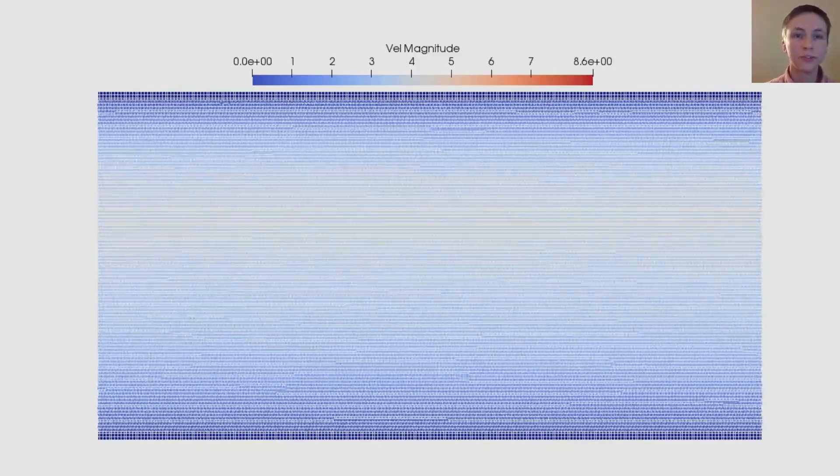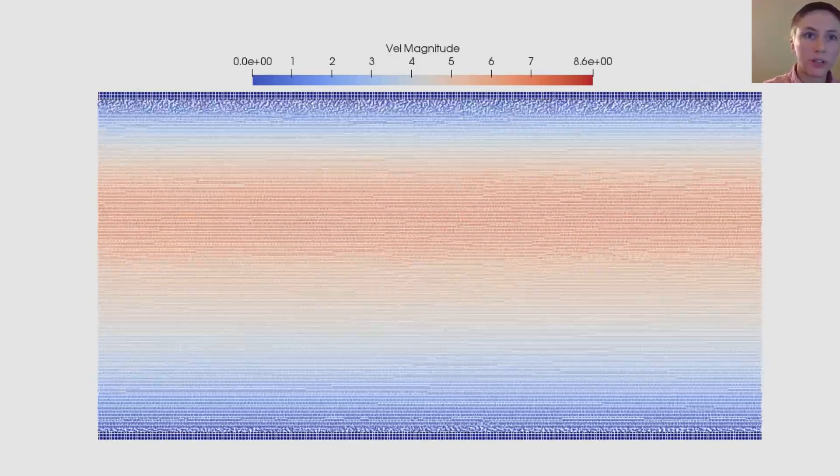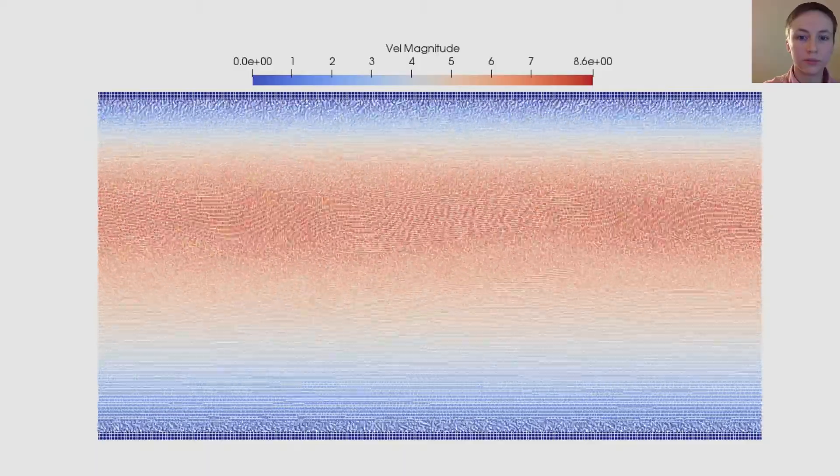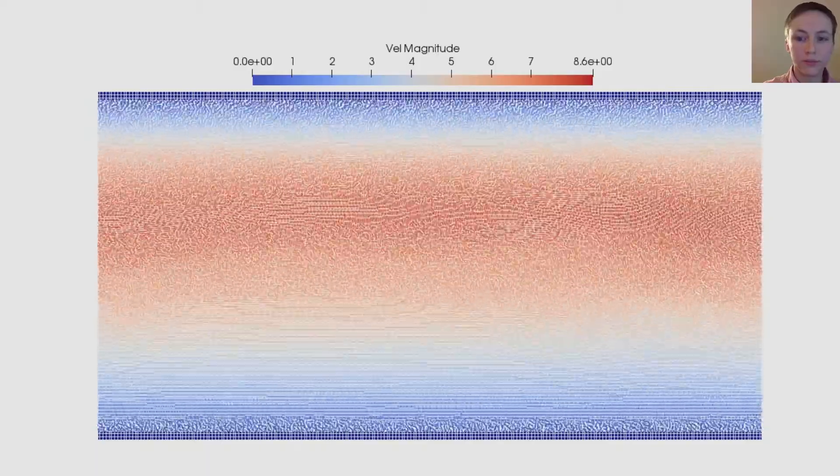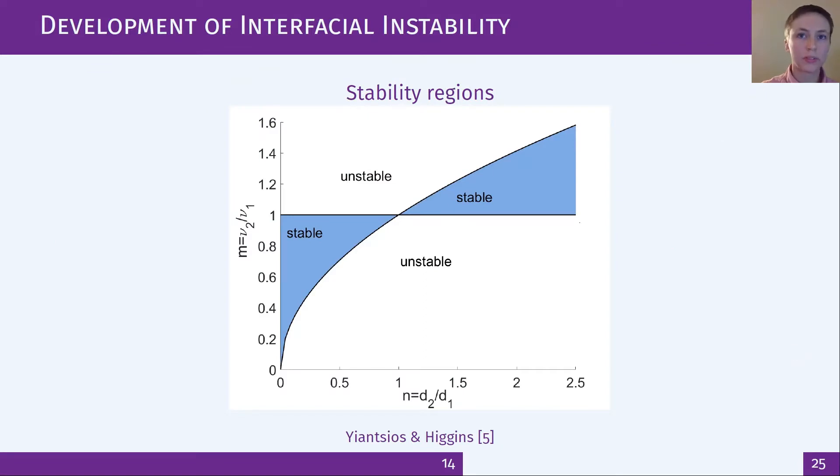This video shows the flow developing and going unstable colored by velocity. You can first see the unsymmetric velocity profile develop and then you can see that the instability starts to develop as a wave at the interface before spreading out across the channel. Now this sort of long wavelength instability occurs when there's a discontinuity in the velocity gradient at the interface as in the first velocity profile I showed. Investigations in the literature tend to use perturbation analysis to investigate this and there are a few simulations. The instability depends only on viscosity ratio and phase width ratio, the m and n I introduced earlier, and is independent of the Reynolds number of the flow.